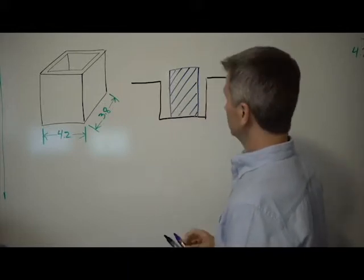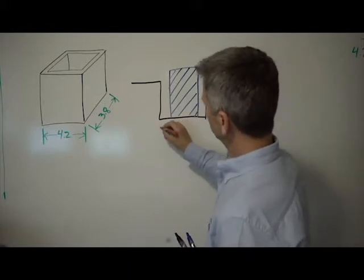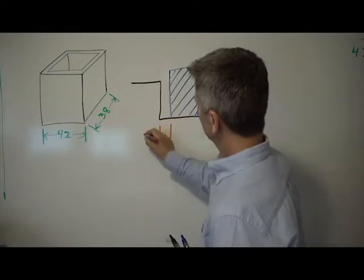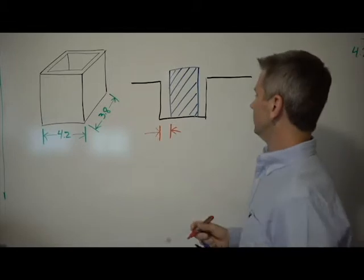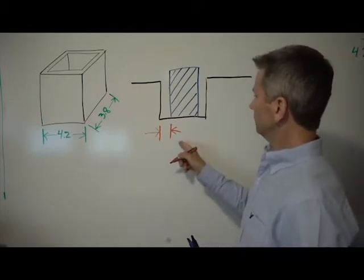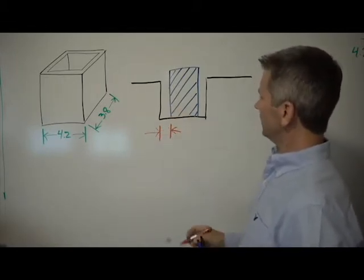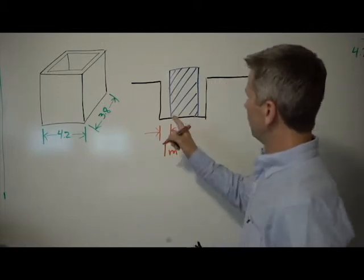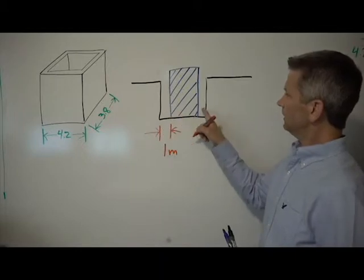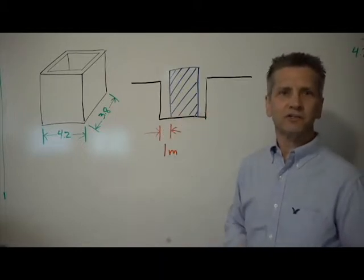Inside of our excavation, the people we send down to the hole can work. And this is called our working room. In this case here, we are going to make a working room on all sides of our building of 1 meter. So we have a 1 meter working room on each side of our building in our excavation.